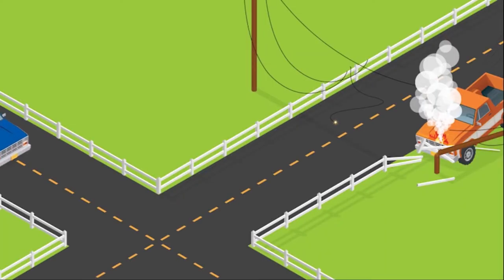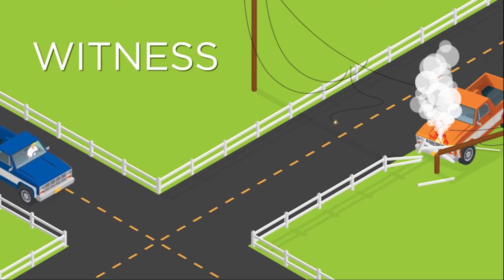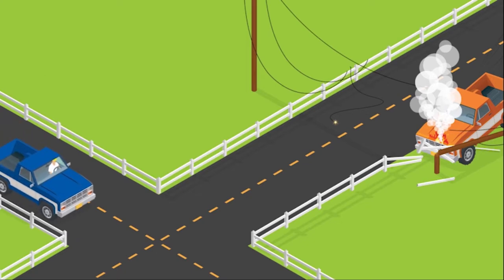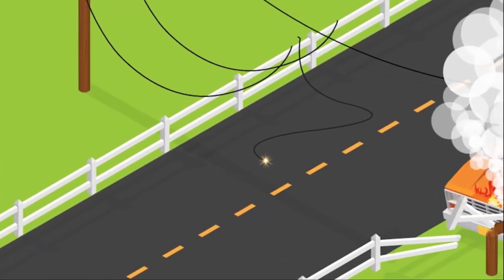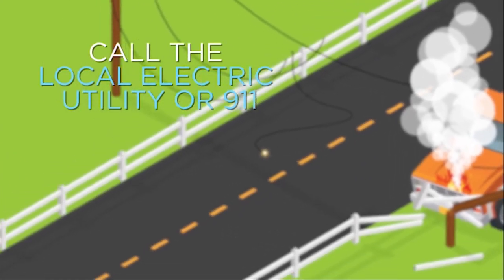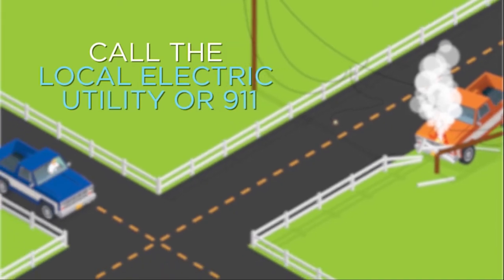It's also worth noting what to do if you witness an accident involving downed power lines. If you see an accident like this, remain in your vehicle. Remember, the ground could be energized. Call the local electric utility or 911 to ensure help is on the way.